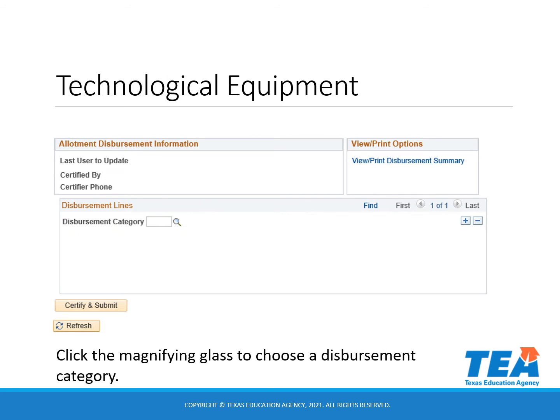There will be red and blue text at the top of this page. We advise that you read this thoroughly. At the bottom of this page, you will see Disbursement Category where you will click on the magnifying glass to see your options.